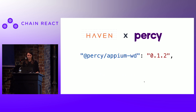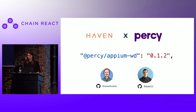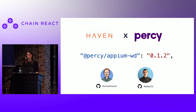Haven and Percy have done a little open source collaboration here. We've created an npm package called @percy/appium-wd, which is based on Appium — kind of like Selenium, a test runner for native apps. Quick shout out to the two main contributors: Thomas Houston, my colleague at Haven — he's here, so you should definitely ask him more questions about this library — and Robert DeLuca, a developer at Percy, who really took this over, got it over the finish line, and helped us open source it.